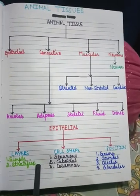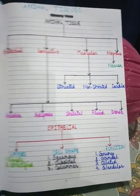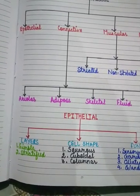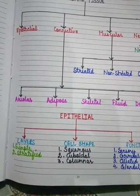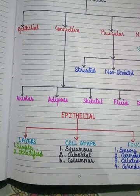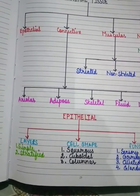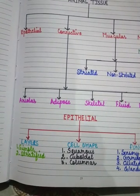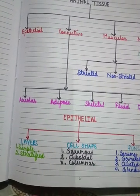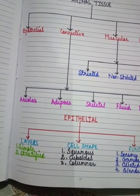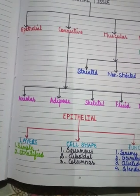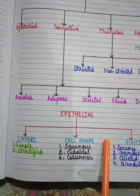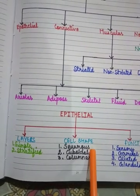The main categories are simple epithelial tissue and stratified epithelial tissue. Epithelial tissues rest over an extracellular matrix called the basement membrane, which is made up of glycoprotein and collagen fibers. They are found all over the body.